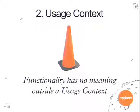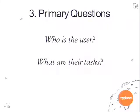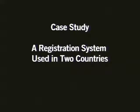The next concept is usage context. I use the traffic cone as my mascot because functionality has no meaning outside of its usage context — the function of the traffic cone is meaningless outside of its context. The last concept is two key questions: who is the user, and what are their tasks? They're very simple questions, but if you've done user experience design you'll know they're often very difficult to answer, yet very important.